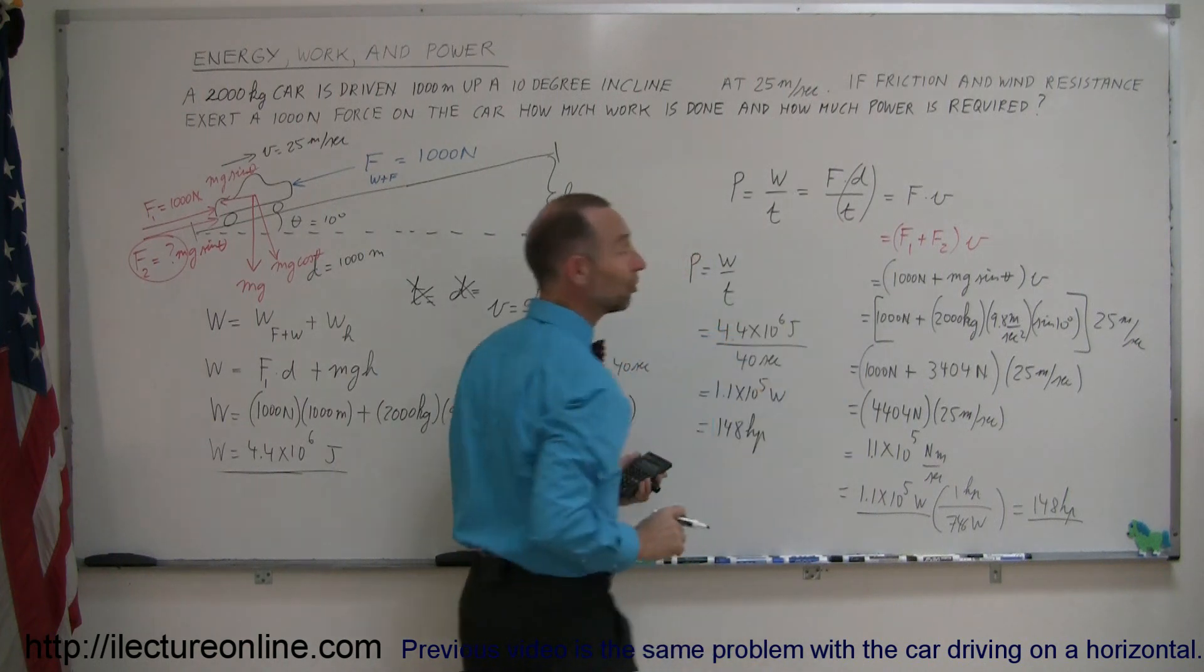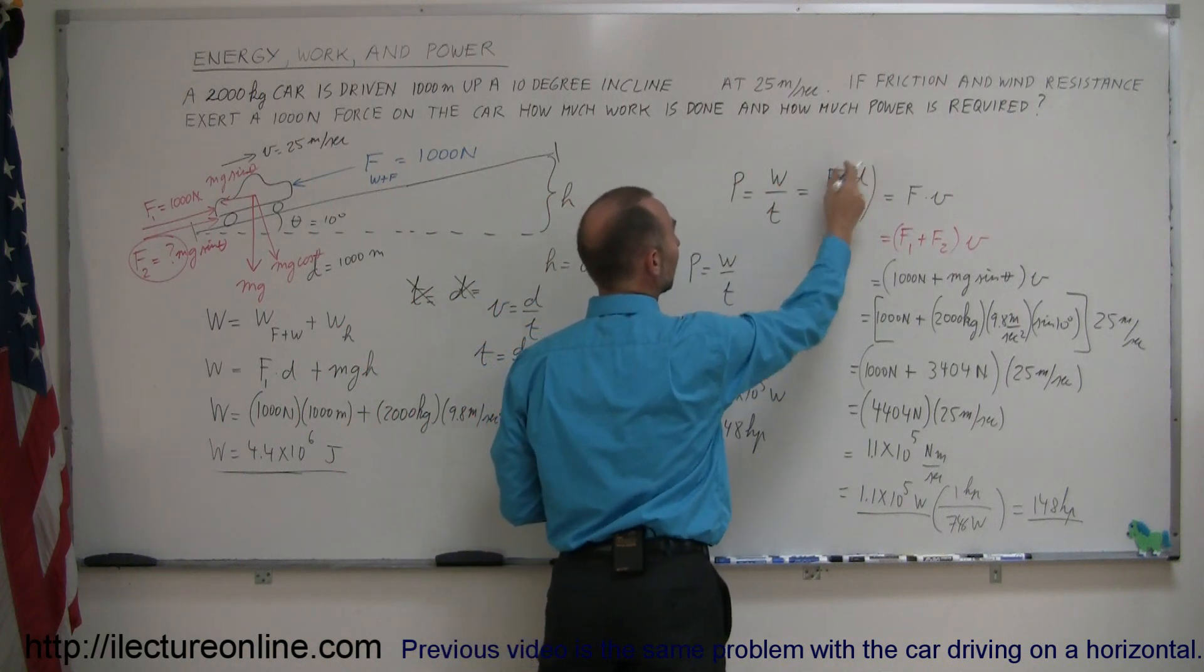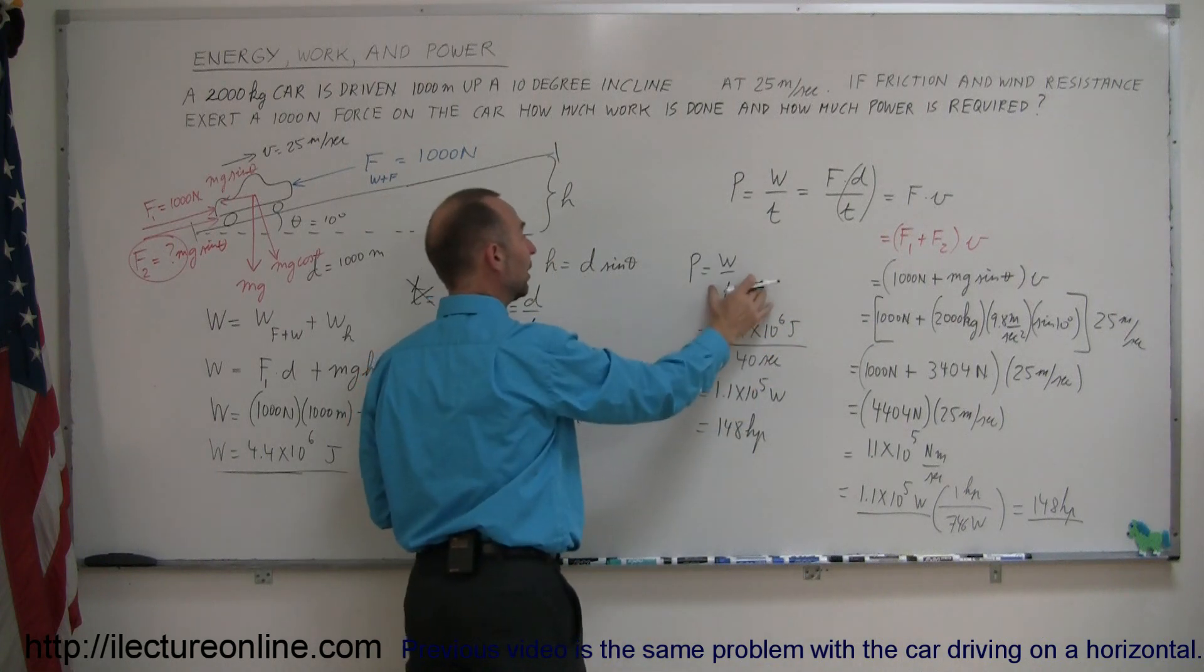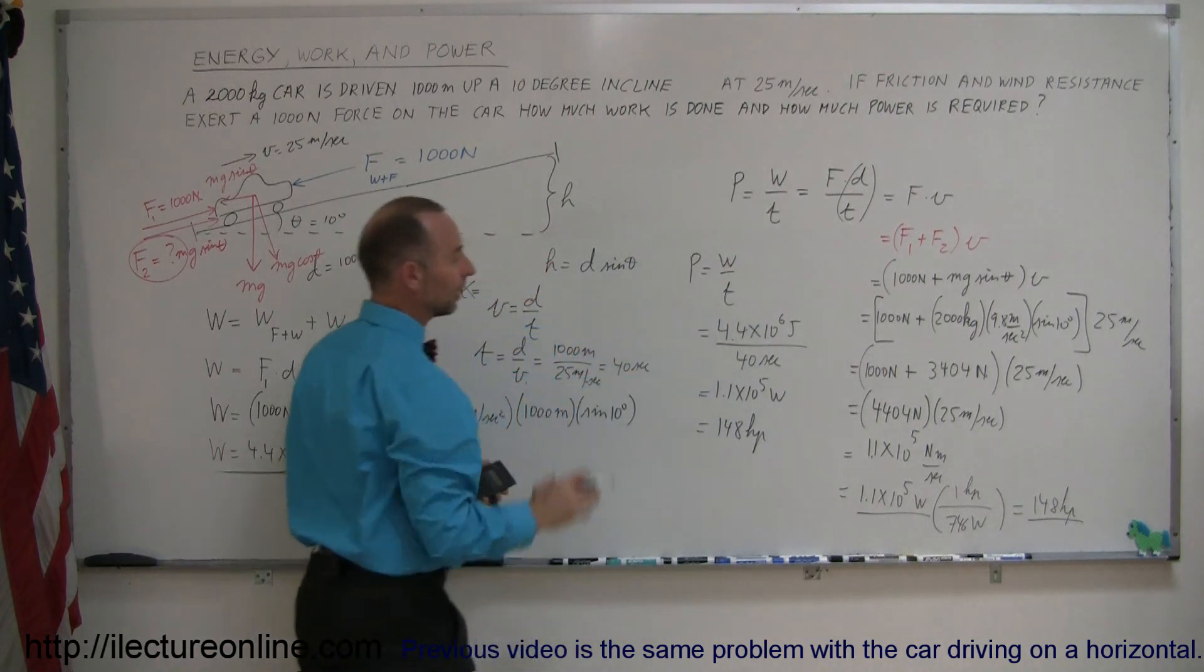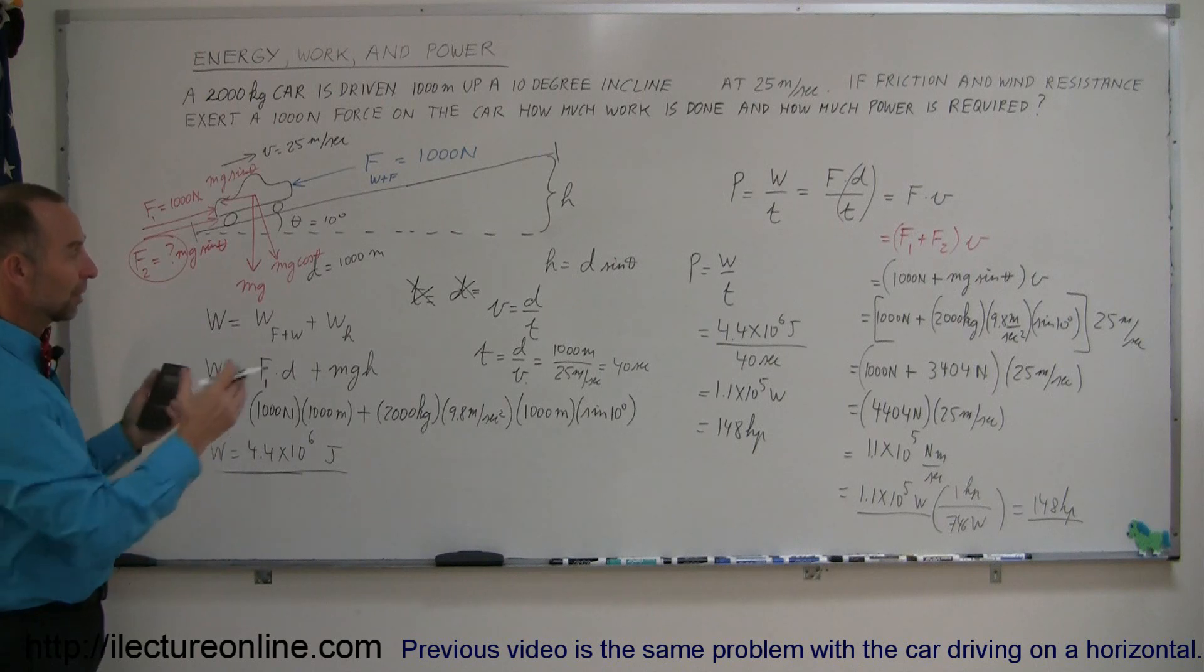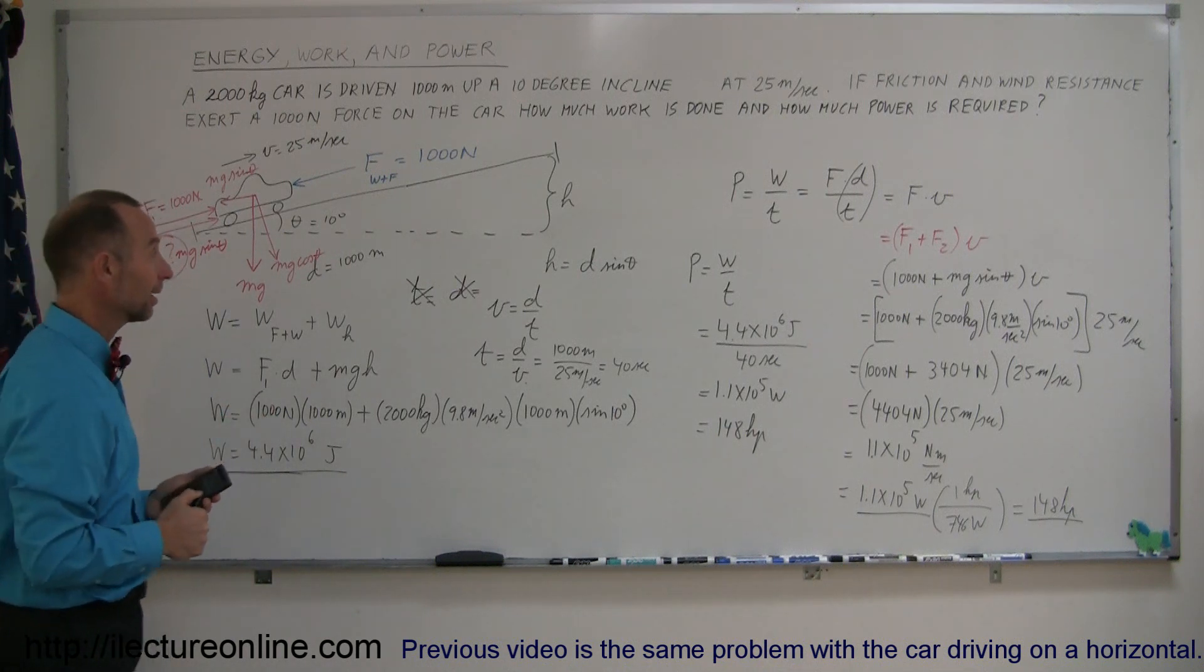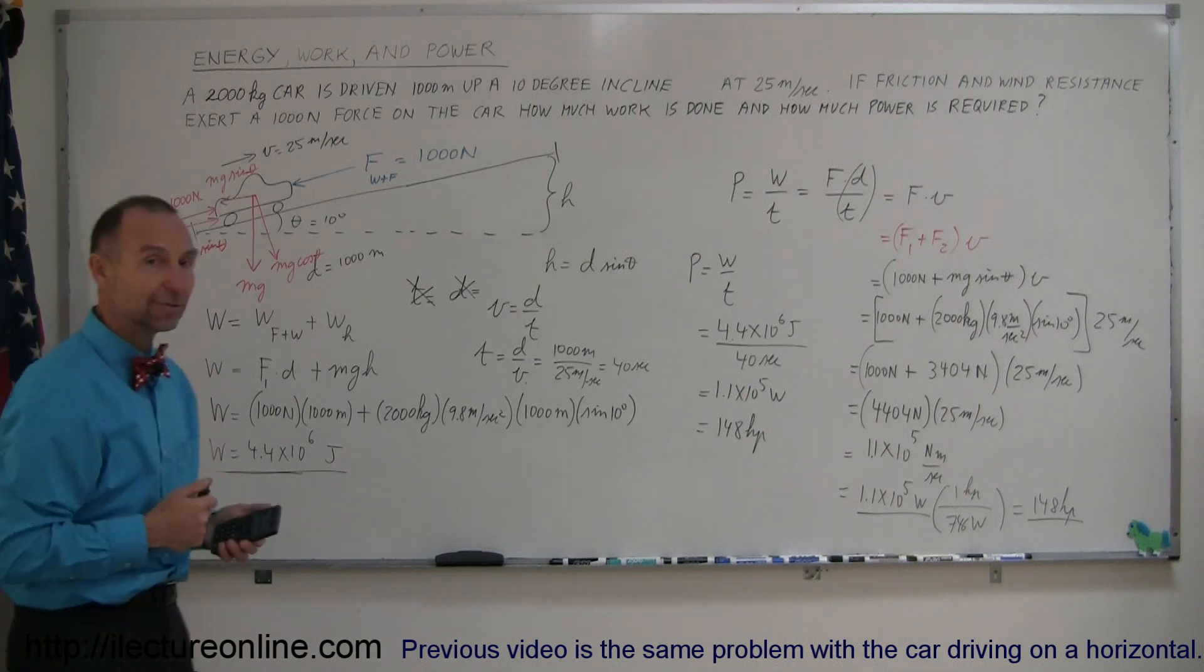So, we can solve it using the definition of power being work over time and work being force times distance so that distance over time is velocity, or we could have simply said it's work over time, find the total work done, divided by the total time it took for the car to go up the incline. So, here's a really good example of how we work with work and power in these kinds of problems. Alright, hopefully that helped and I'll come up with a few more examples. Good luck, give that a try.